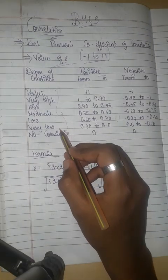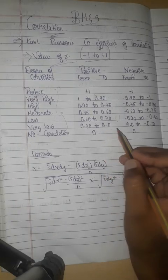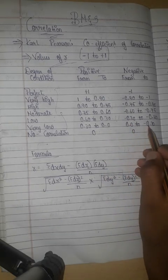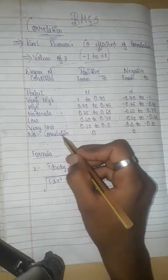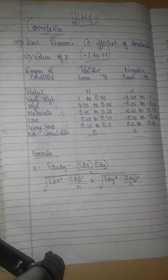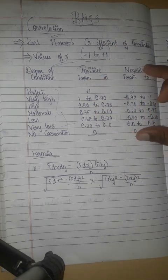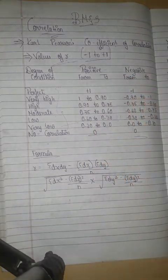The range negative 0.30 to 0.00 is very low negative correlation, and 0.00 to 0.30 is very low positive. The range at 0.00 indicates no correlation.